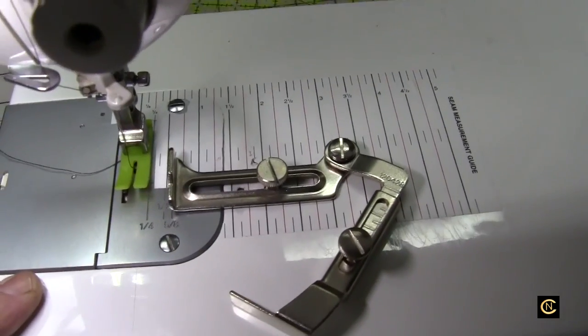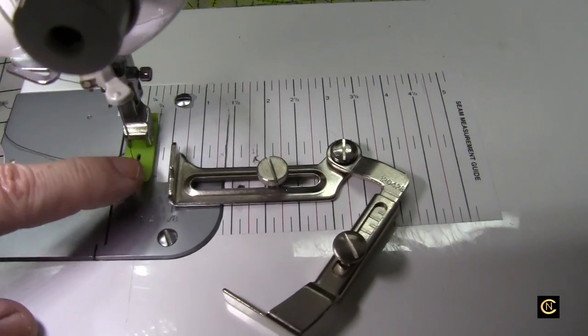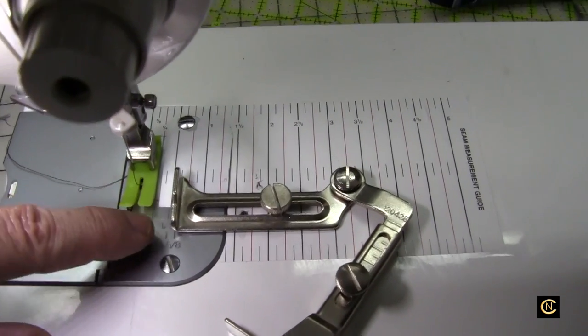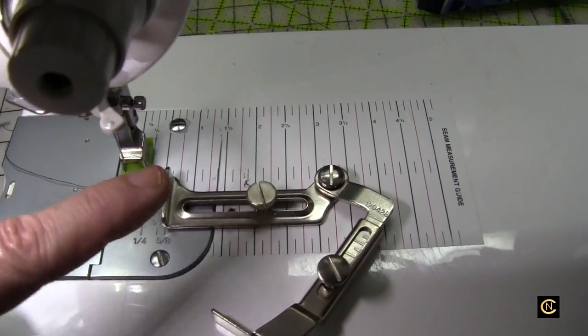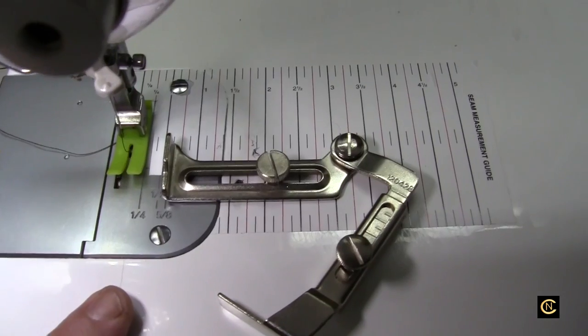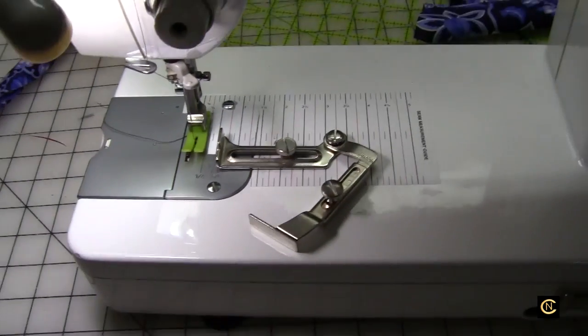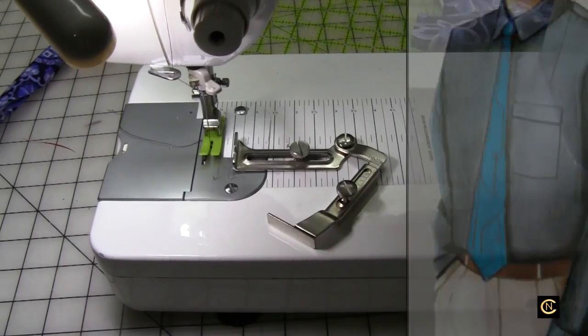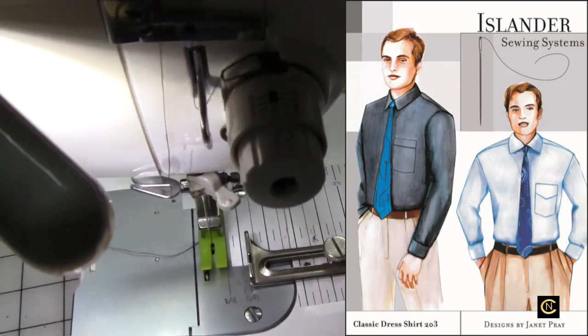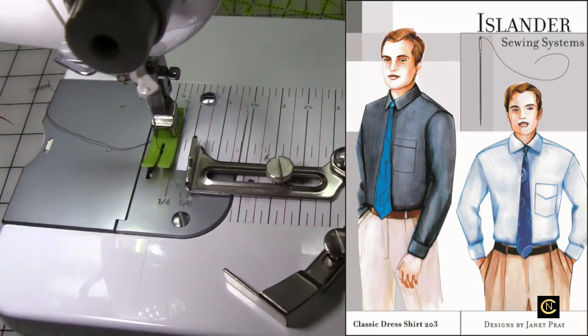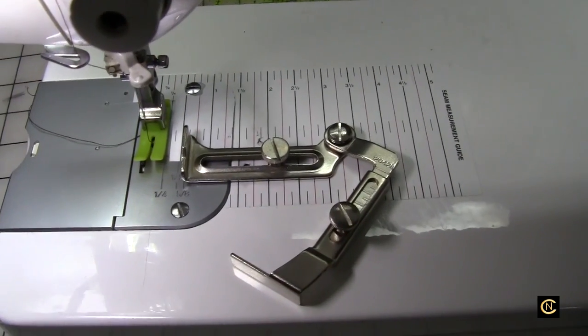It has a quarter inch seam allowance, three eighths of an inch seam allowance, and five eighths of an inch seam allowance throughout the whole pattern. So if you get an Islander Sewing pattern, especially the men's shirt pattern, make sure you watch the seam allowances.